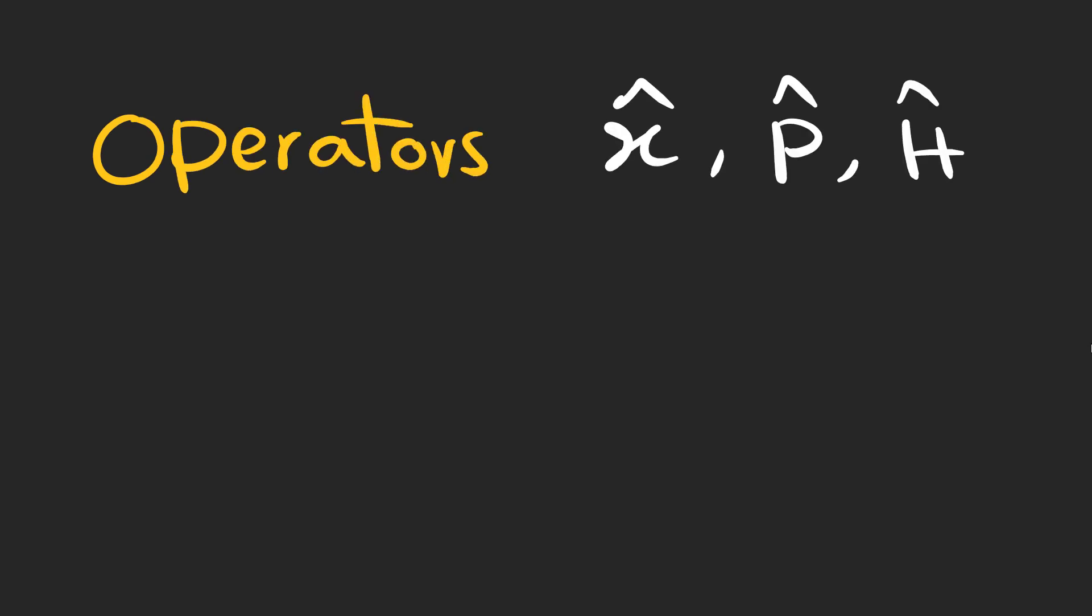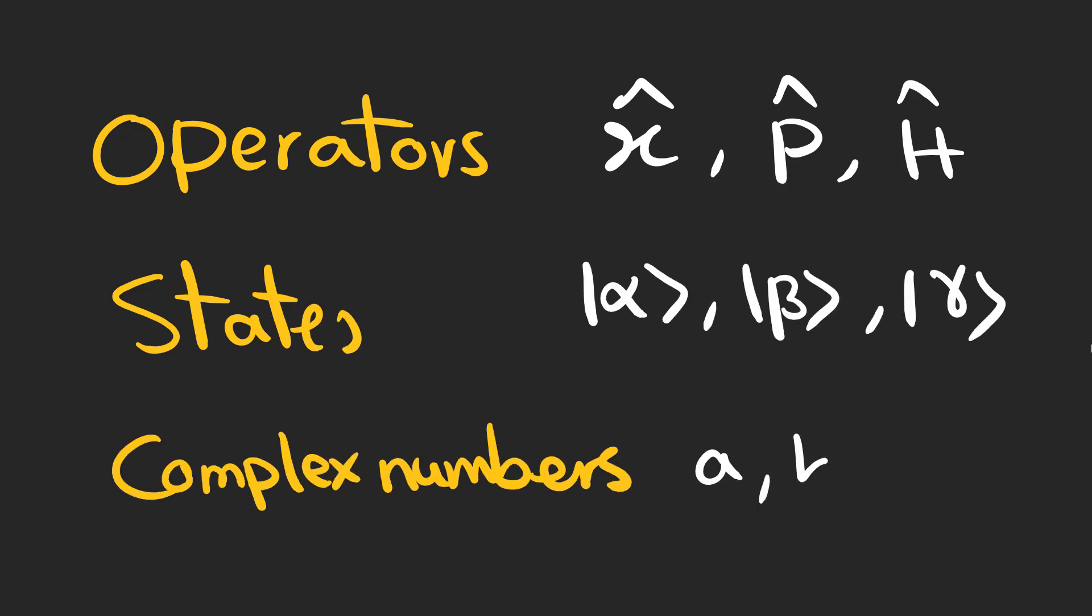In quantum physics, we deal with operators like position, momentum, and Hamiltonian, vectors or states that show the state of a system, and complex numbers which are coefficients or expectation values.